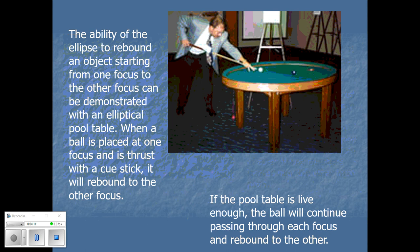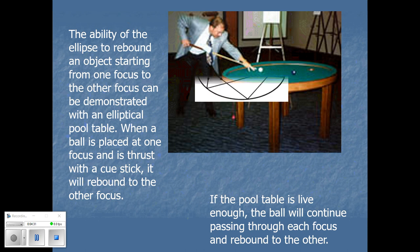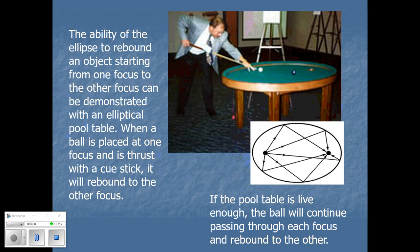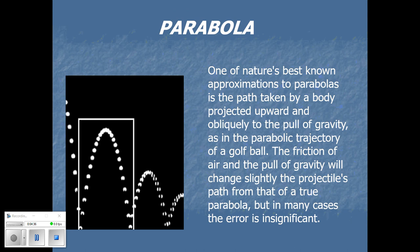If you ever come across an elliptical pool table, you can test this out. If you place two pool balls at the focal points of the elliptical table and use the stick to shoot one ball so it hits the edge, it should rebound and hit the other ball — just like the reflection property we saw a few slides ago.